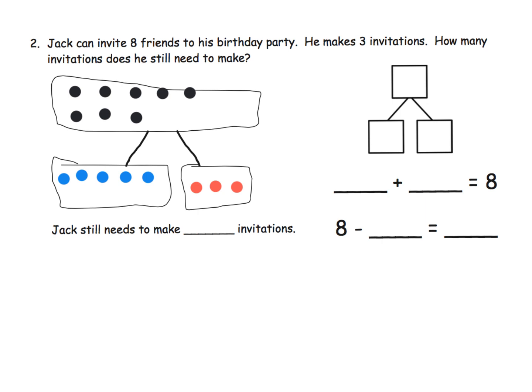And if we were going to number bond that, put that in a number bond, our eight would be the whole. He makes three. And then how many invitations does he still need to make? That's five right here.